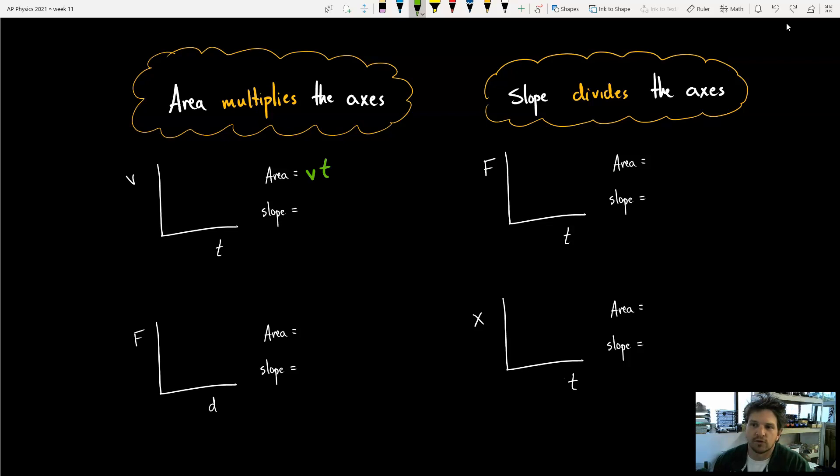If this is a force versus time graph, this is a little bit more relevant to what we're doing today. The area would just be force times time. For a force distance graph, we just did our unit on energy and work, you had force times distance to give us work there. On a position time graph, the area would give us position times time. Yeah, it's just as simple as that.